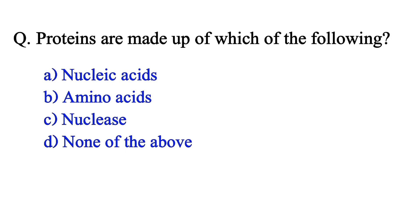Proteins are made of which of the following? Option A: nucleic acid. Option B: amino acids. Option C: nucleus. Option D: none of the above. The correct answer is Option B: amino acids.